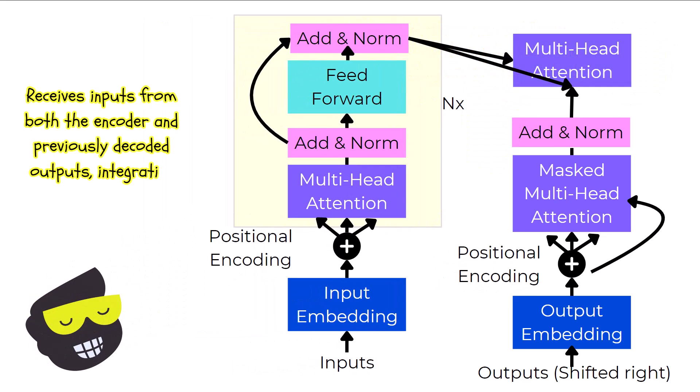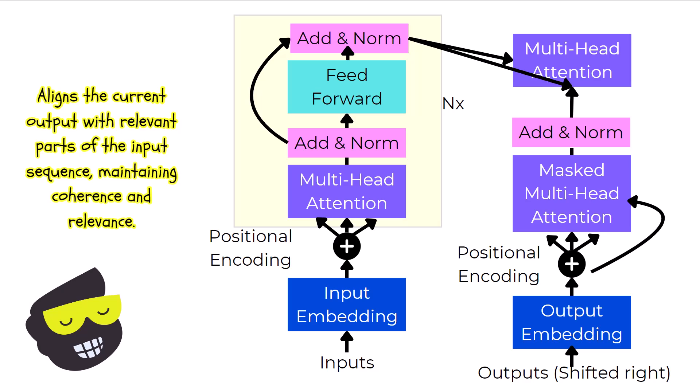In the decoder, the multi-head attention layer has a unique role. It takes inputs from two sources: the encoder and the previously decoded outputs. The first set of inputs comes from the encoder's add and norm layers, which contains the processed information from the entire input sequence. The second set comes from the add and norm layer in the encoder that processes the partially generated outputs, shifted-write outputs. This dual input allows the decoder to align the current output with relevant parts of the input sequence, ensuring that the translation or generation considers both source content and the context established by the previously decoded tokens. This mechanism is crucial for maintaining coherence and relevance.